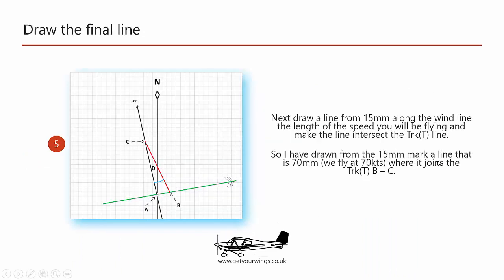Now we will mark the wind speed from point A to point B. In this case it's 15 so we measure along that line 15mm and mark a point. We're flying at 70 knots so we will now draw a line that is 70mm long. Make sure that at the 70mm mark it intersects our track true, point C.